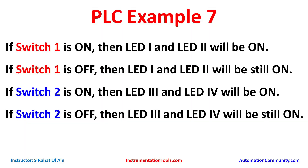Example 7: If Switch 1 is on, then LED 1 and LED 2 will be on. If Switch 1 is off, then LED 1 and LED 2 will still be on. If Switch 2 is on, then LED 3 and LED 4 will be on. If Switch 2 is off, then LED 3 and LED 4 will still be on. That means when Switch 1 is turned on, two LEDs turn on, but when Switch 1 is turned off, LED 1 and LED 2 should have turned off, but instead they still remain on. Similarly, when Switch 2 is on, LEDs turn on, and when Switch 2 is turned off, LEDs remain on instead of turning off.